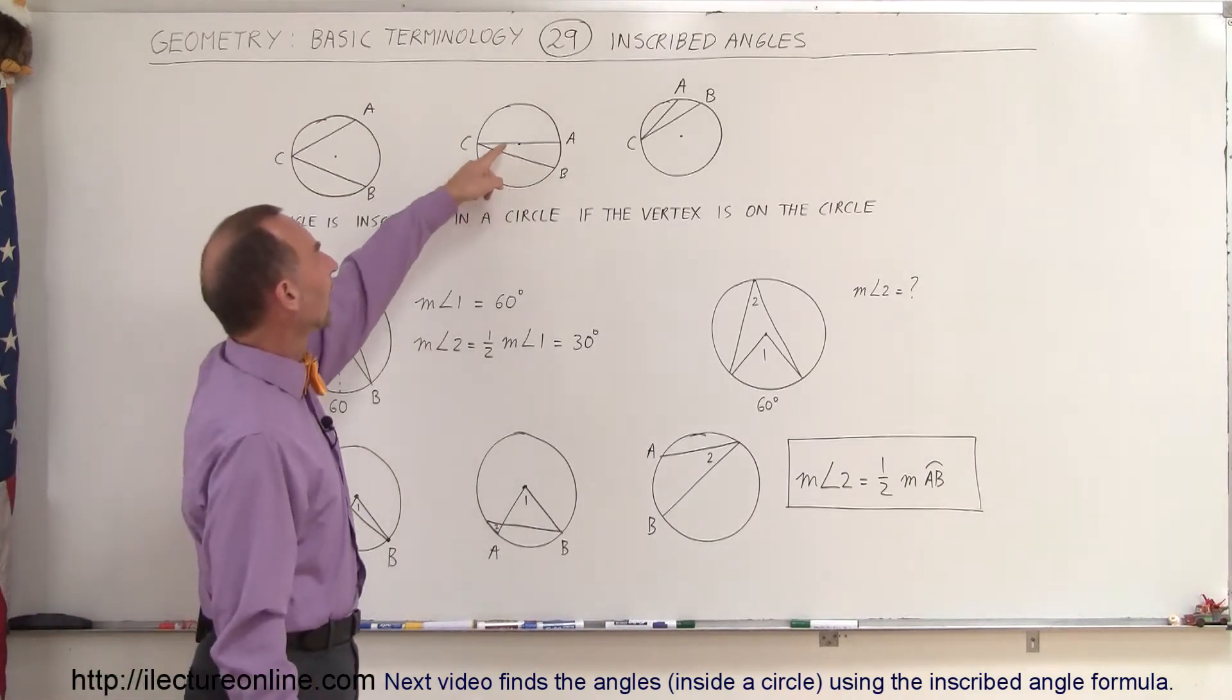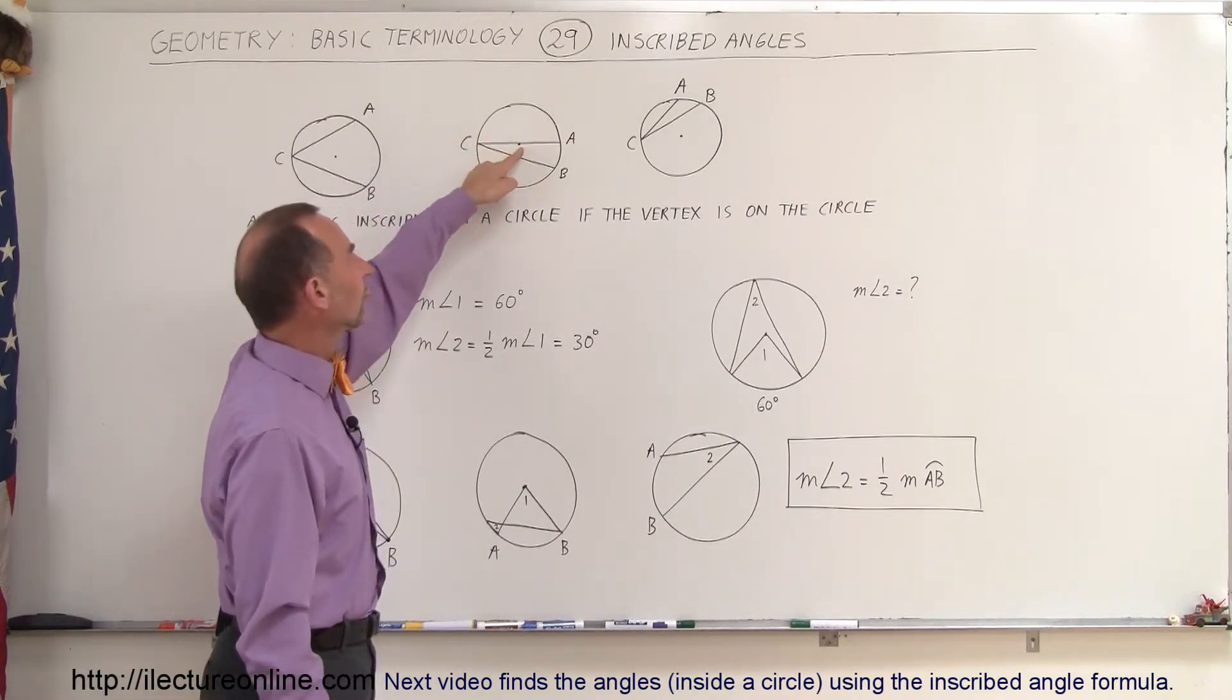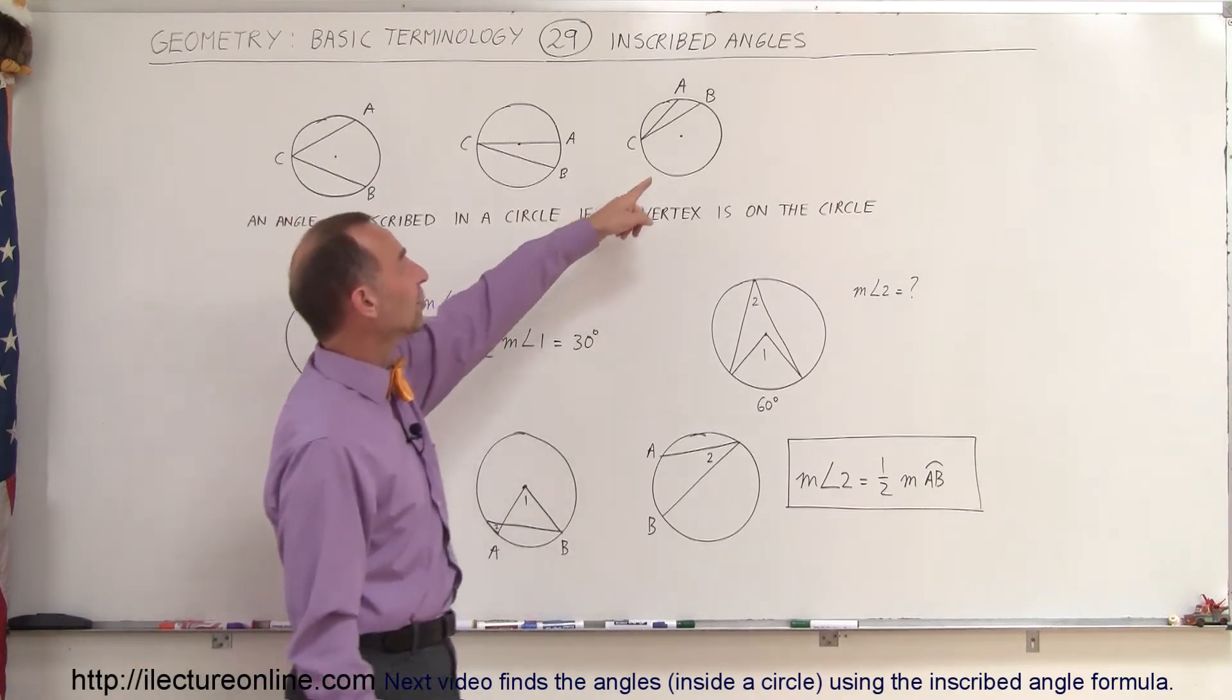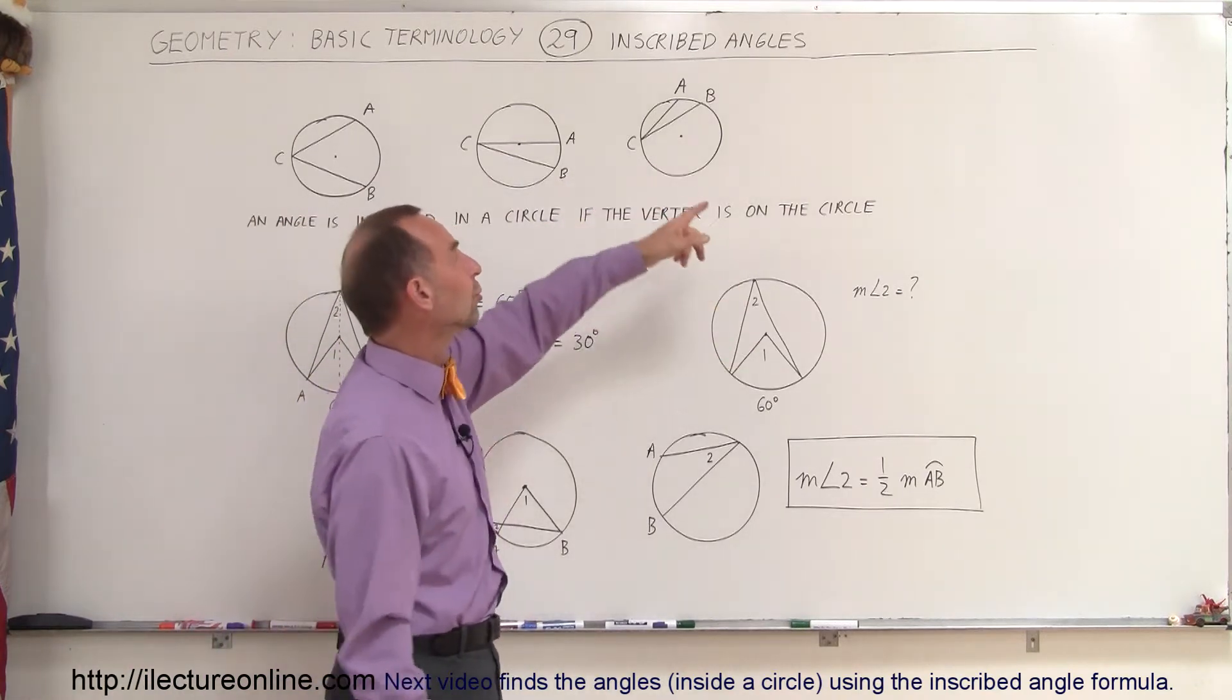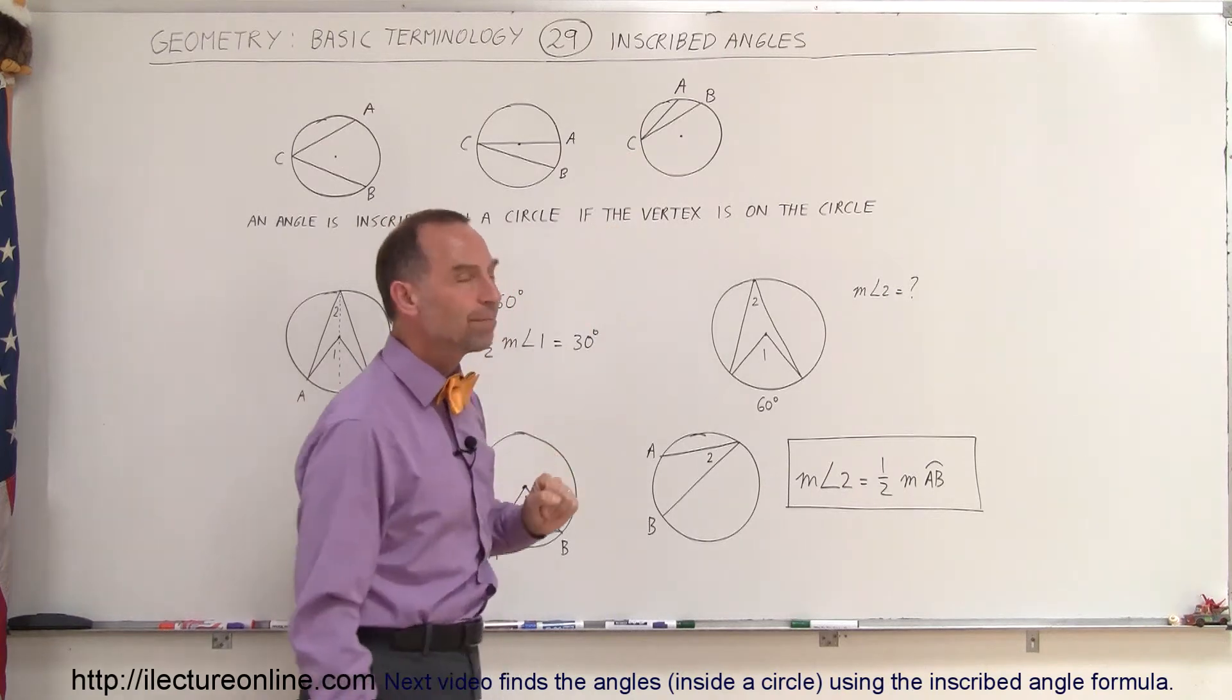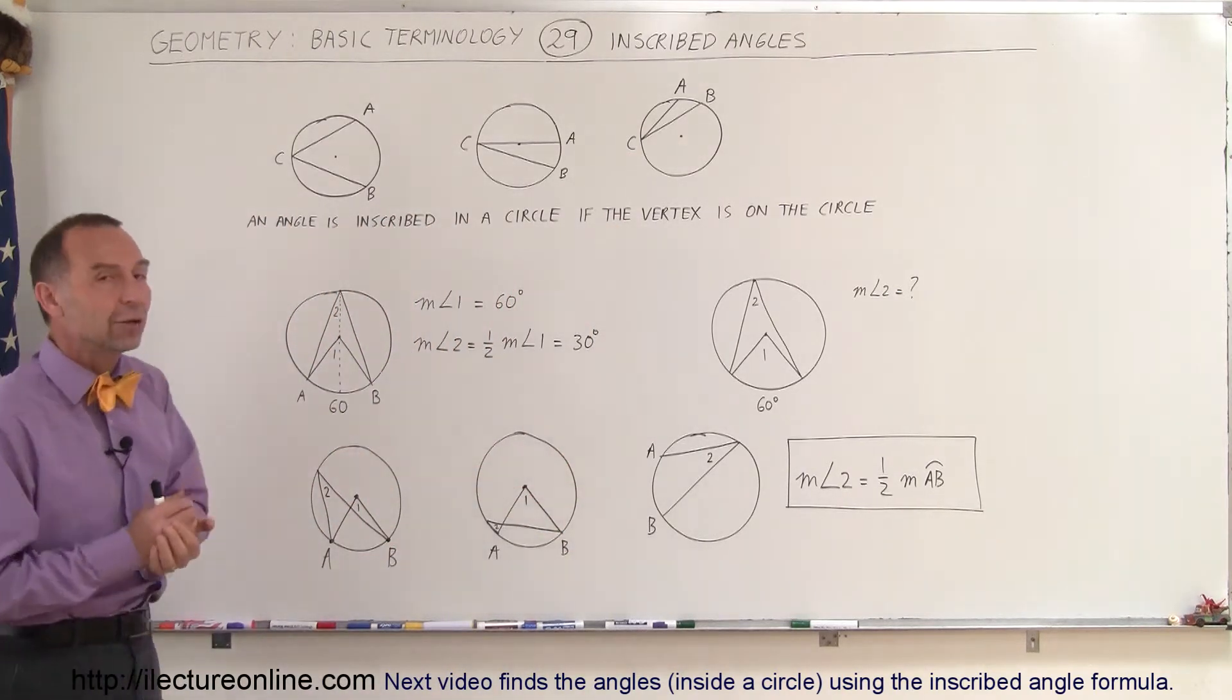Here, one of the lines goes through the central point on the circle, or the center of the circle. And here, the center of the circle is not in between the two lines from C to A and C to B. In all cases, they're still called inscribed angles.